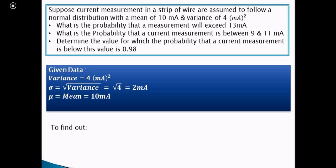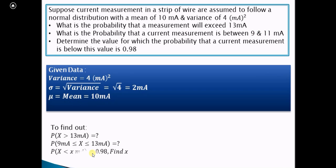In the first case, we have to find the probability that the measurement will exceed 13 mA — that is, P(X > 13 mA). In the second case, we find the probability that the current measurement lies between 9 mA and 11 mA. In the third case, given that P(X < x) = 0.98, we have to find the value of X.